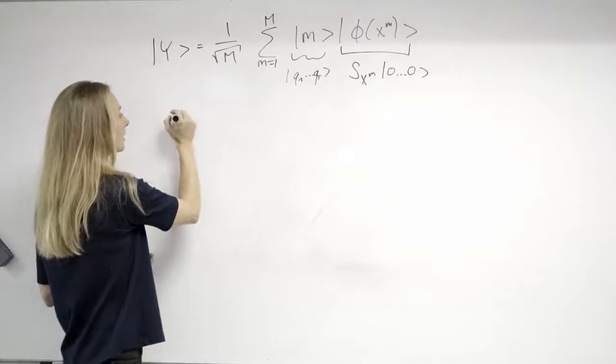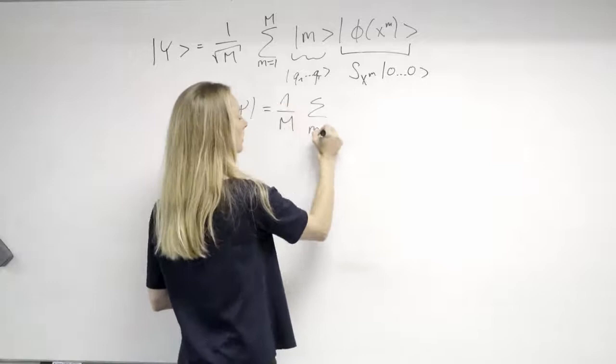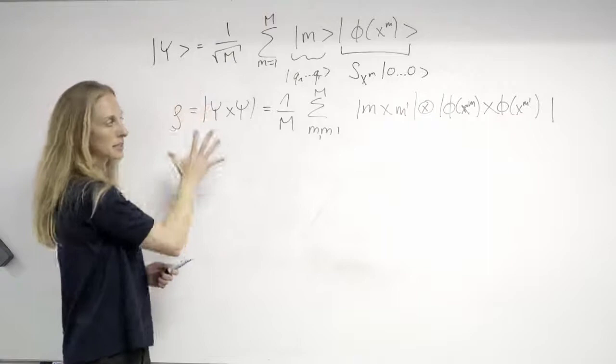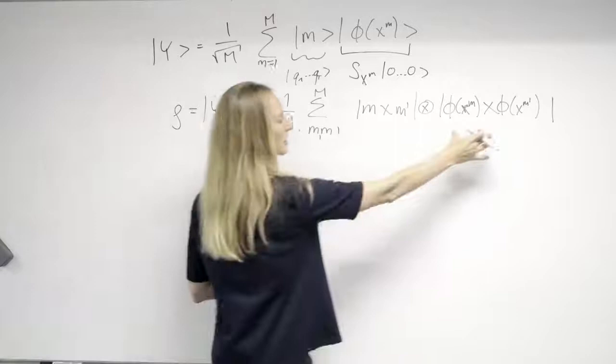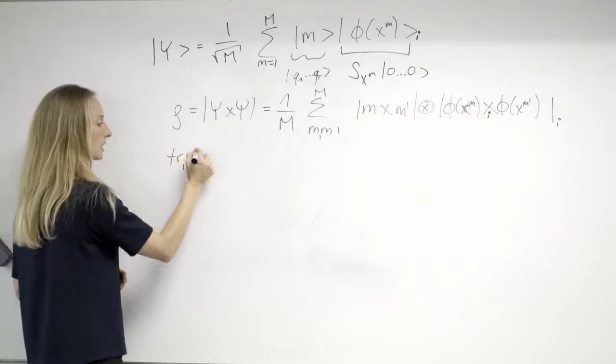Look at what the density matrix of this state is. To compute the density matrix we basically have to get the outer product of these Dirac states. So this is just me writing this state here as a density matrix. And now the magic happens if we trace out the subsystem. So let me make it very clear and mark this with an I. By tracing out the subsystem, which we can write like this, we actually get a state that looks as follows.